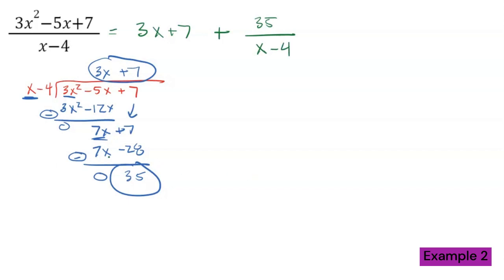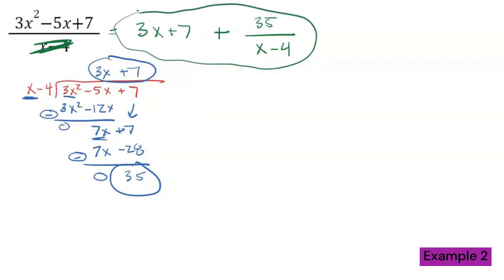So the actual answer to the original problem is the quotient 3x + 7 plus the remainder 35 divided by the original divisor x - 4. You can also write it as (3x + 7)(x - 4) + 35, since the x - 4s reduce to 1. This answers the question: what is 3x² - 5x + 7 divided by x - 4?